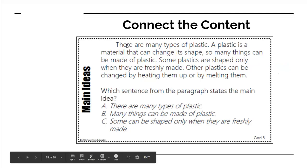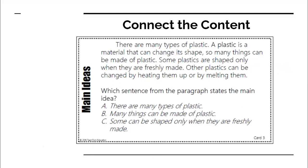There are many types of plastic. A plastic is a material that can change its shape. So many things can be made of plastic. Some plastics are shaped only when they are freshly made. Other plastics can be changed by heating them up or by melting them. Which sentence is the main idea?